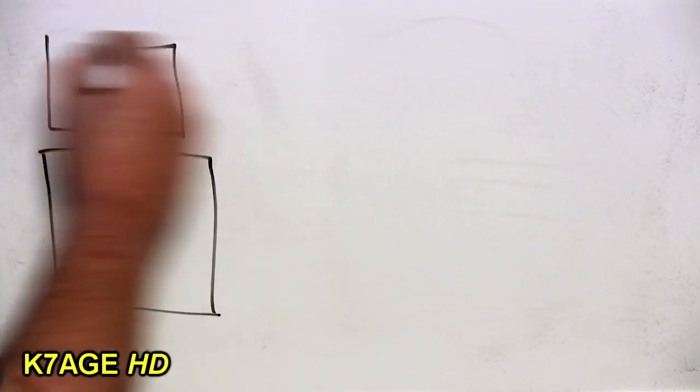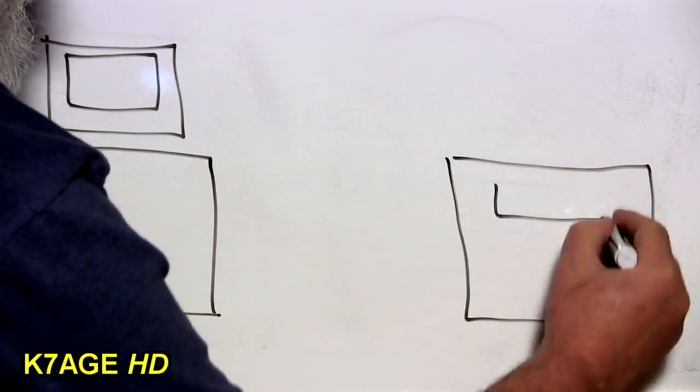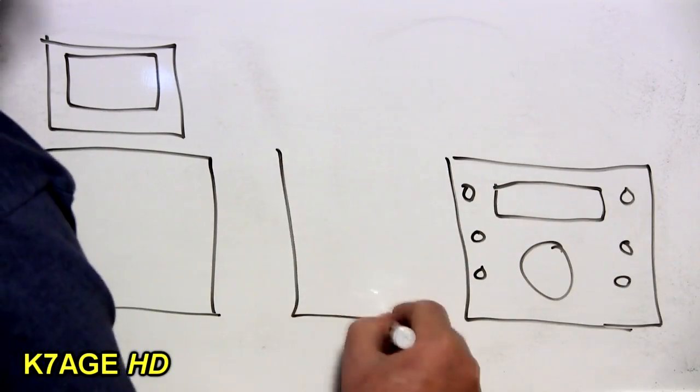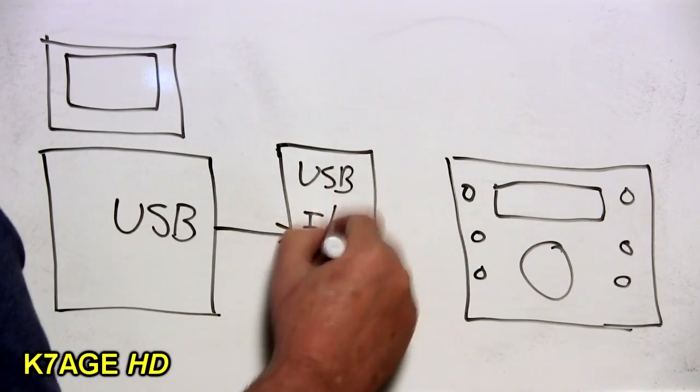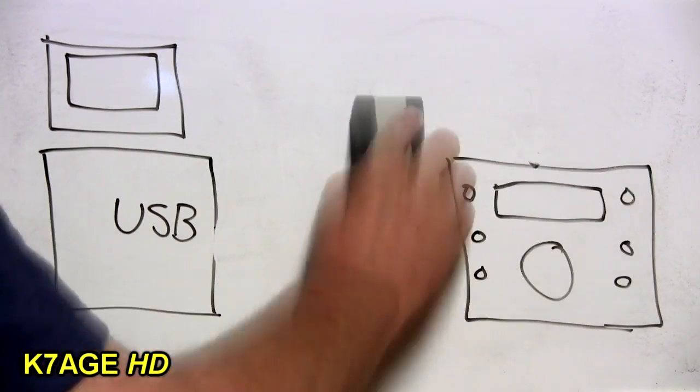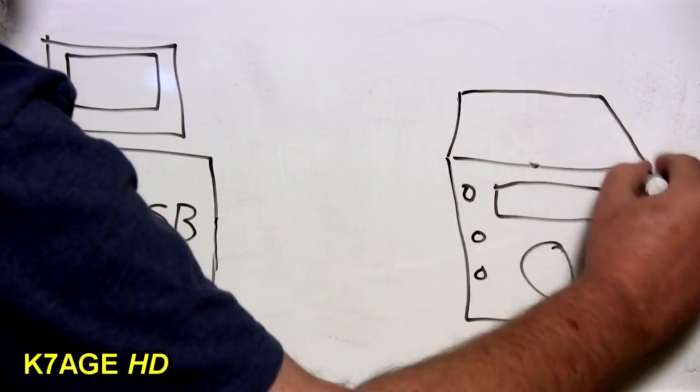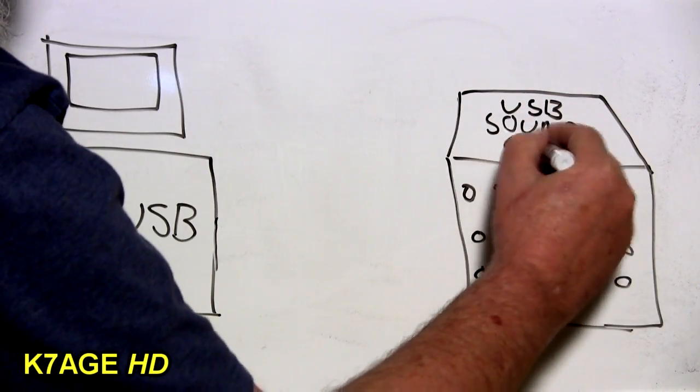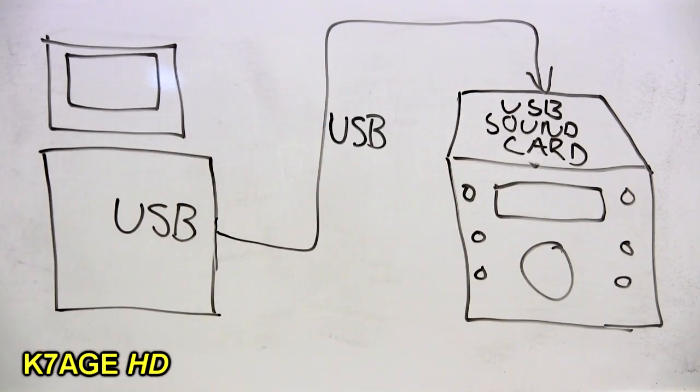So now the next progression is to move the sound card interface into the radio. So now no box is required from the computer to the radio. A single USB connection handles both the audio and rig control. This is built into the radio. This is now available on many of the new ICOM, Kenwood and Yaesu radios.